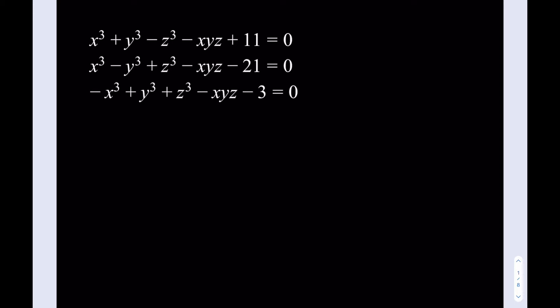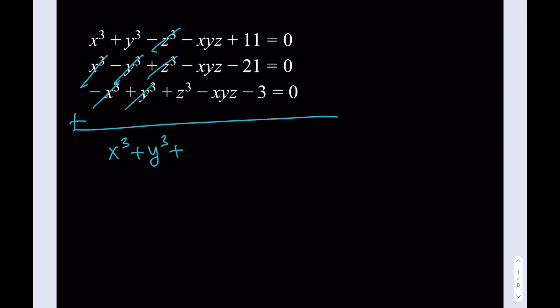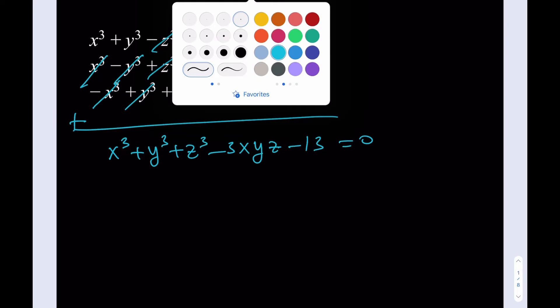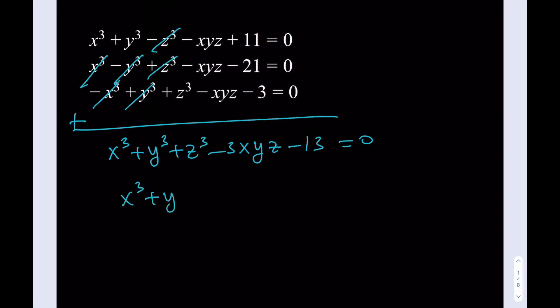We have three equations — notice the similarities between them. Each has x cubed, y cubed, z cubed, x, y, z, and a constant. The first thing I'm going to do is add these equations. When I do, x cubed, y cubed, and z cubed will cancel out, leaving x cubed plus y cubed plus z cubed minus 3xyz equals negative 13. Isolating the cubes gives x cubed plus y cubed plus z cubed equals 3xyz plus 13.